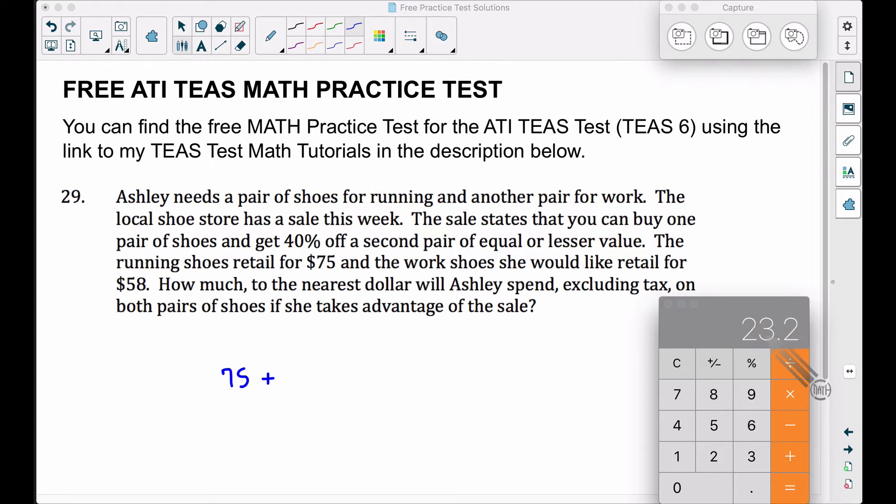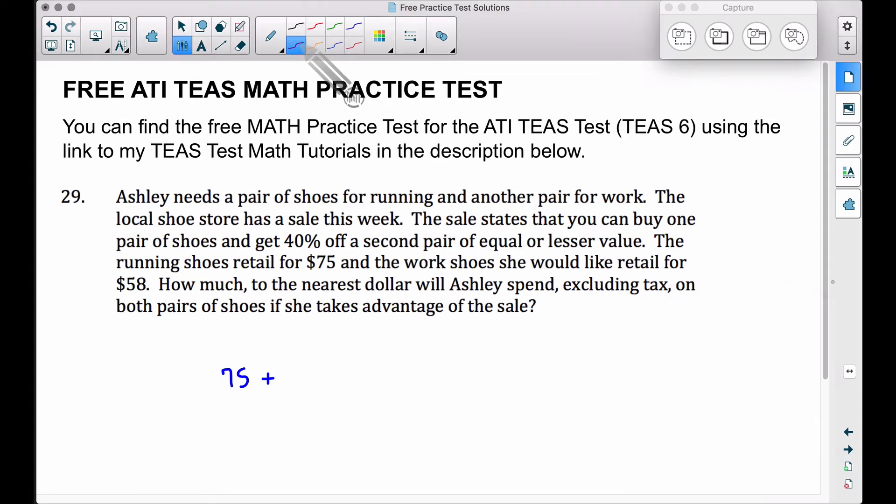However, this is not what Ashley's going to pay for that pair of shoes. This is what she gets off of the $58. So let's take $58 and subtract $23.20. When she gets 40% off of the $58, when we subtract that, we get $34.80. That's how much she's going to pay for that second pair of shoes.